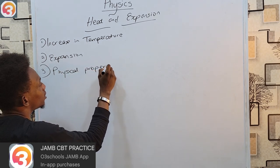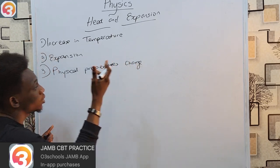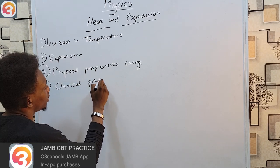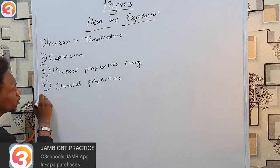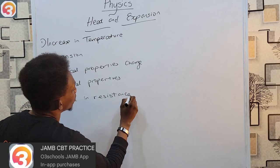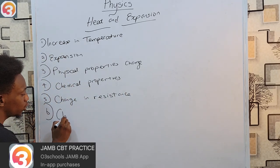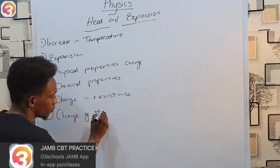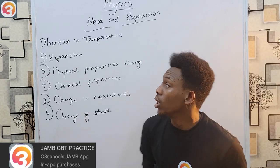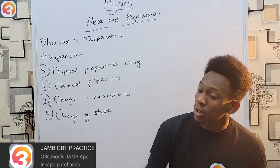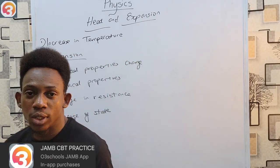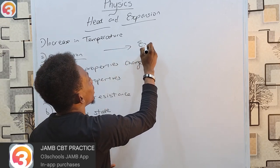Some physical properties change due to heat, and chemical properties may also change. There is also change in resistance — the resistance of any metal changes with increase or decrease in heat. We also have change of state. Right now, however, we are focusing on the expansion effect of heat, which we refer to as expansivity.